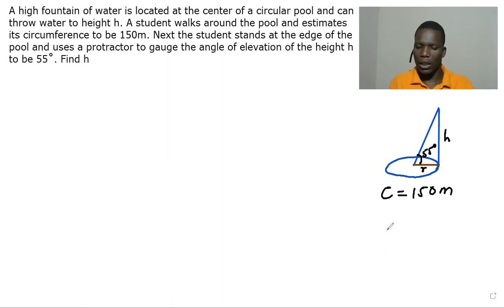If you look at this diagram, you're going to see that h is our opposite, and then the radius here is the adjacent. If we take it into trigonometric functions, this is going to be our hypotenuse. So now, what we are looking for is h, but we only have the angle and the circumference.